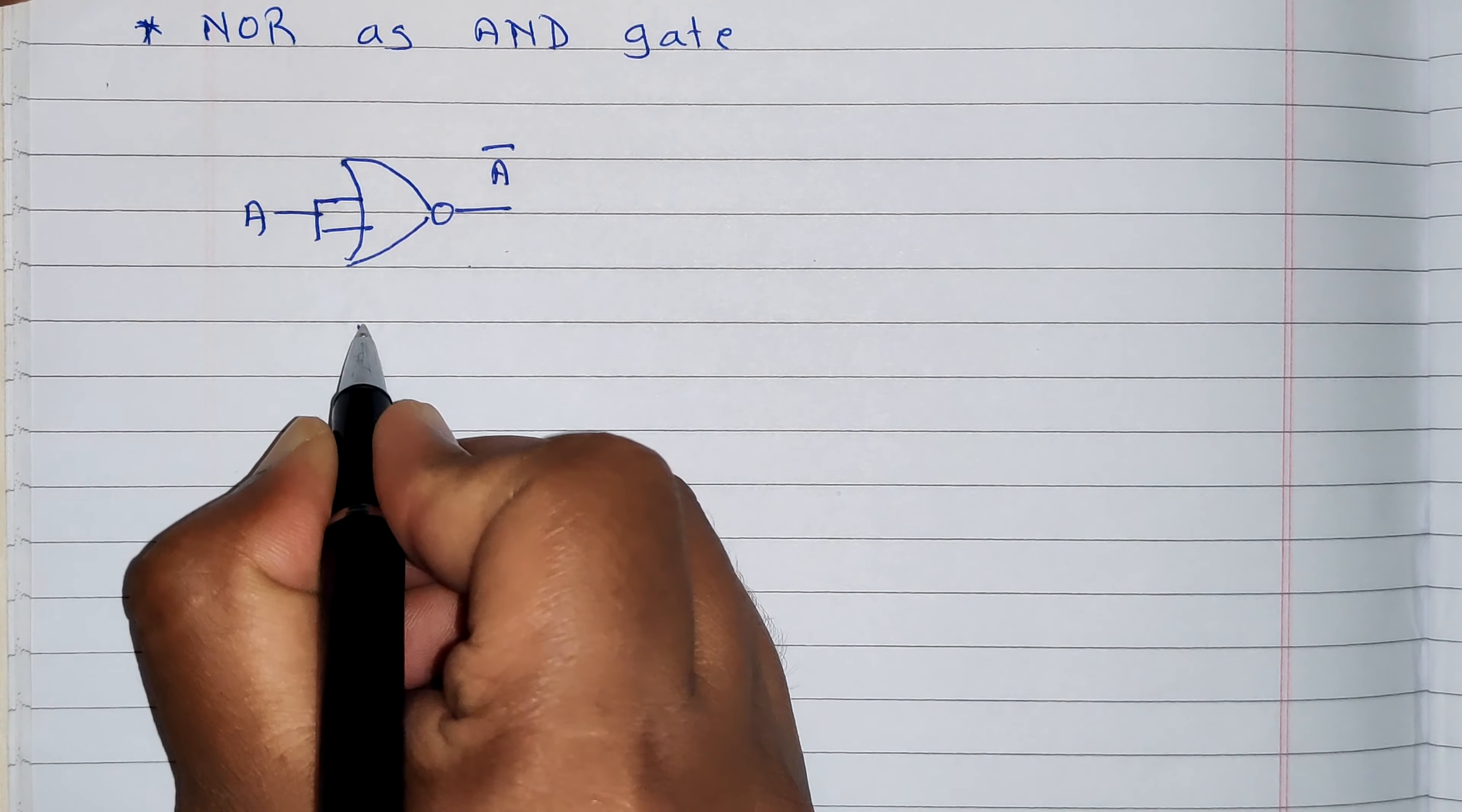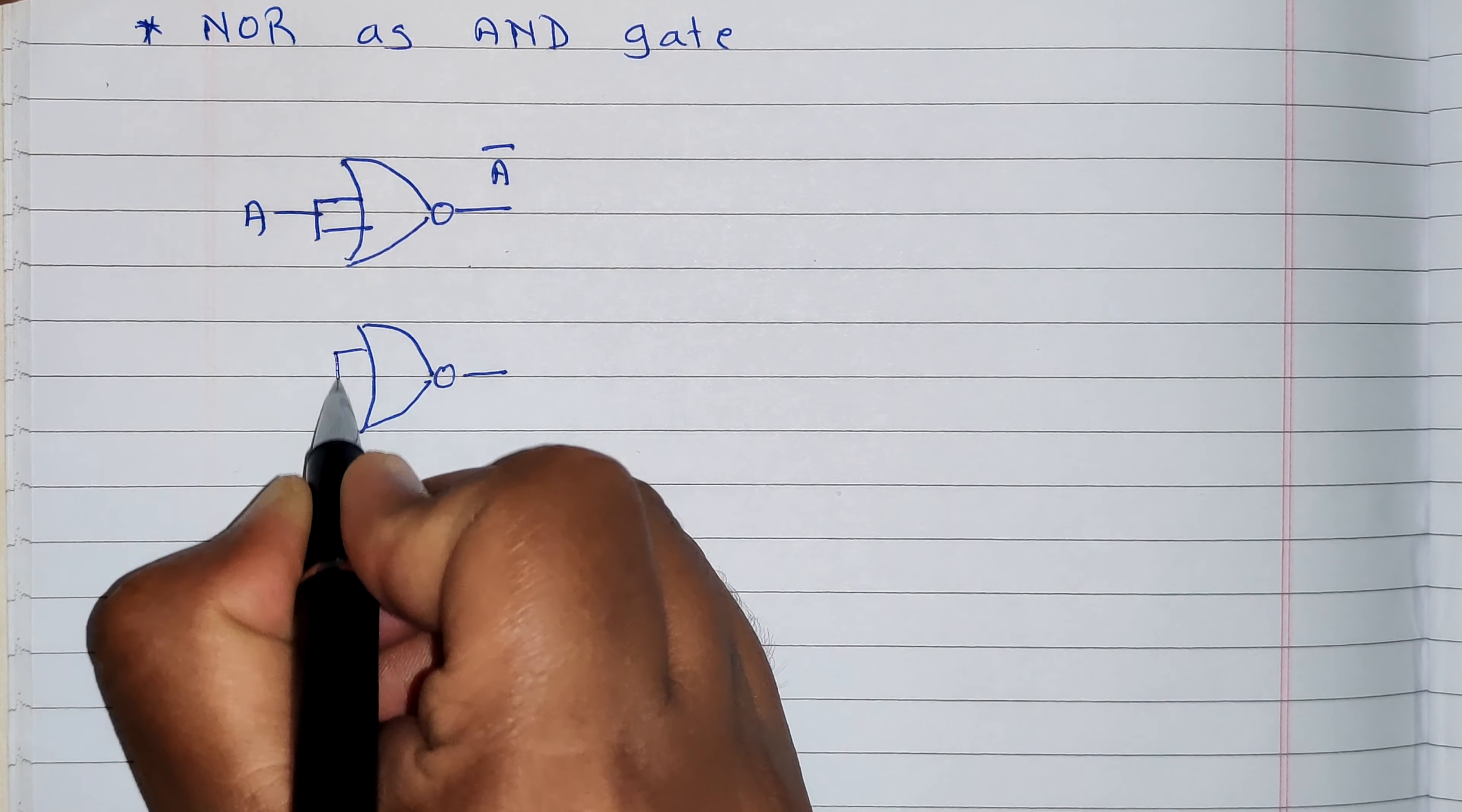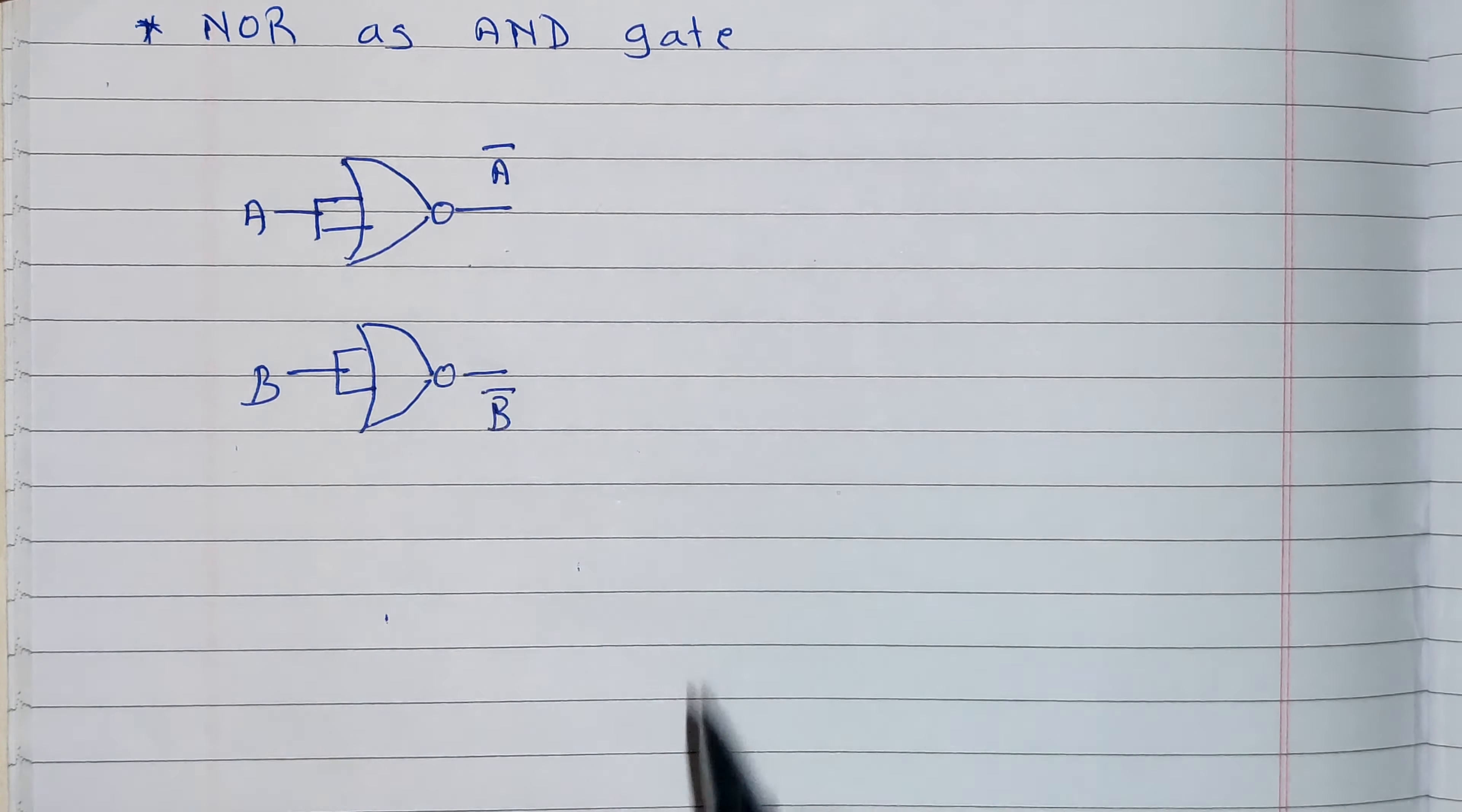Similarly, we will perform for B input. This is NOR as NOT. Let's say input is B. Then towards output we will get B bar.